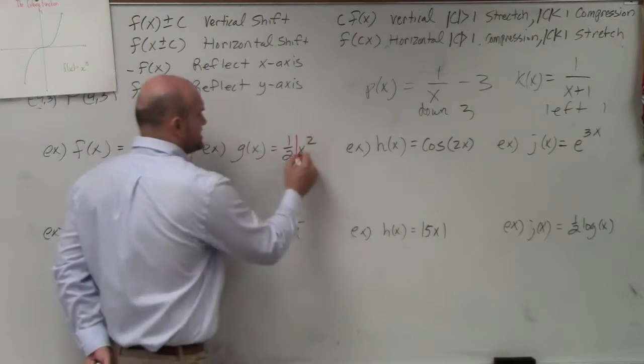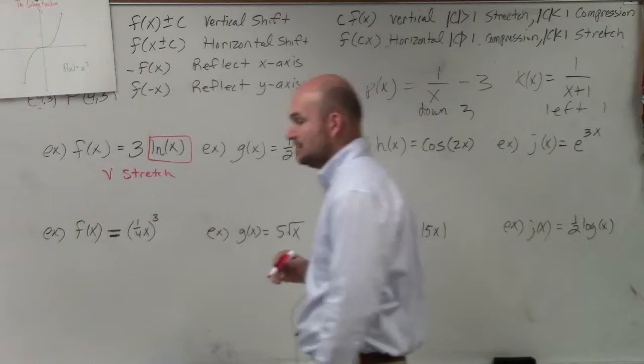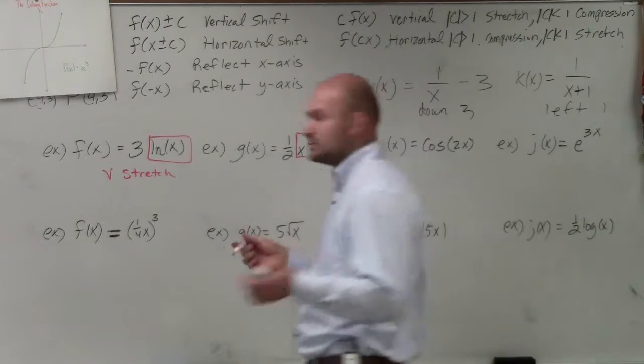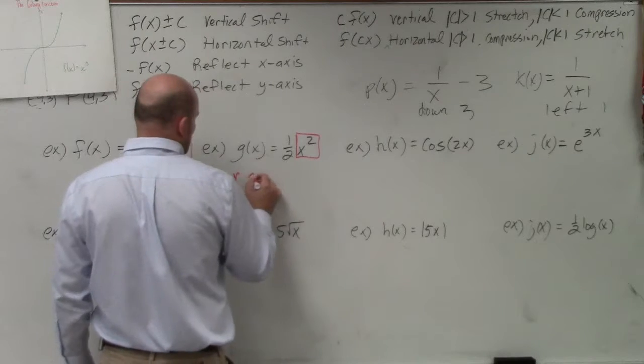Over here, you can see that x squared is unchanged. So therefore, I'm multiplying by the outside. But the absolute value of C is 1 half, which is less than 1. So it's going to be a vertical compression.